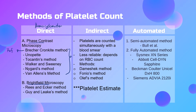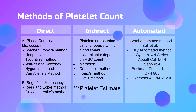When using the bright field microscope, we can either use the Rees-Ecker method or the Guy and Leake method. The difference is in the dye incorporated in the diluting fluid. Rees-Ecker uses brilliant crystal blue, while Guy and Leake uses crystal violet in the diluting fluid.